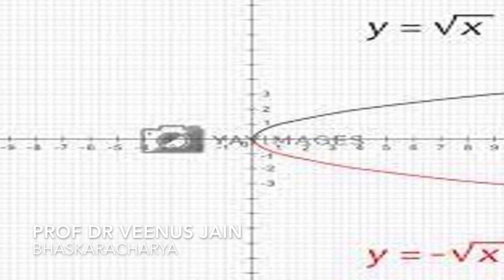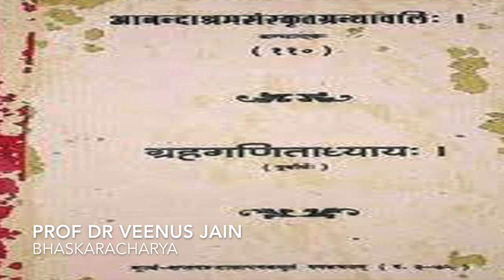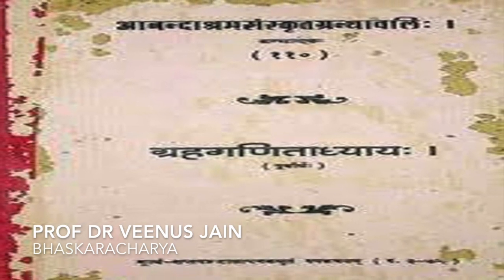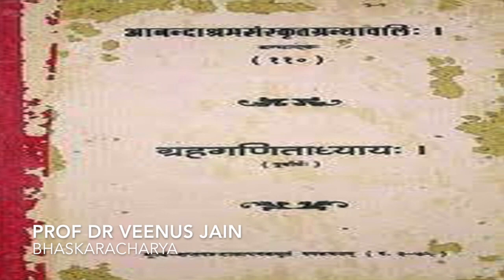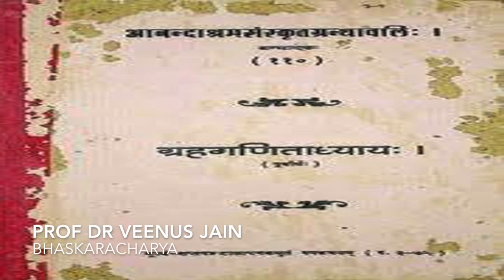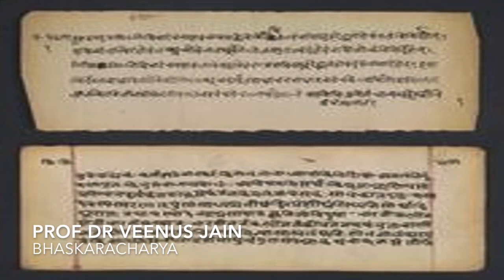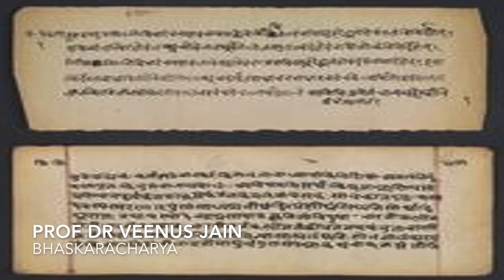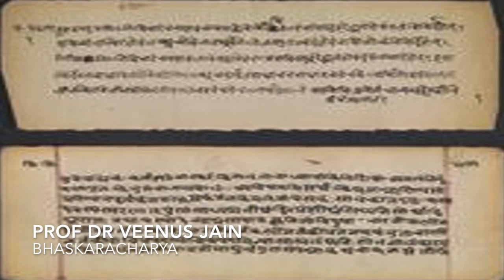In the third section, while treating the motion of planets, he considered their instantaneous speeds. It consists of 451 verses. The last part is known as Goladhyaya, which is the study of spheres. These four sections deal with arithmetic, algebra, mathematics of the planets, and spheres respectively.